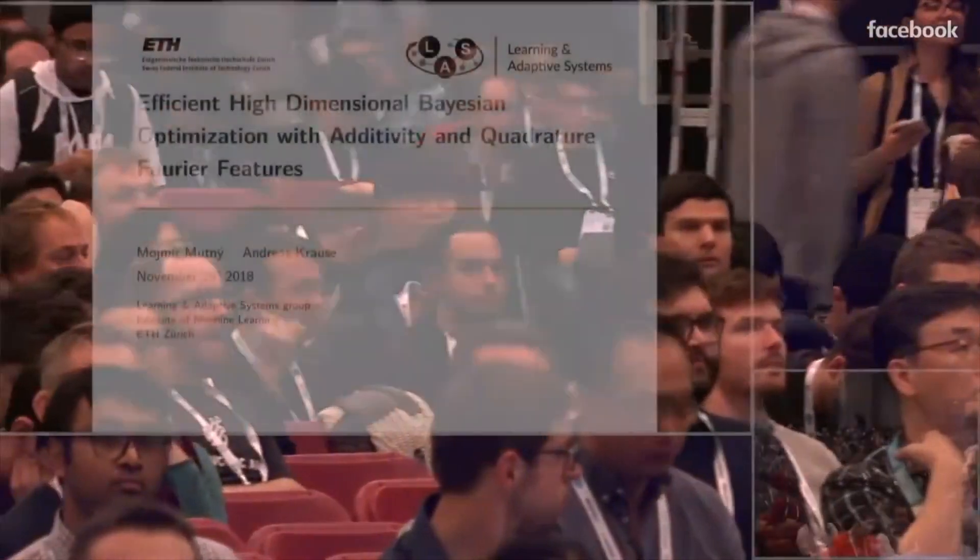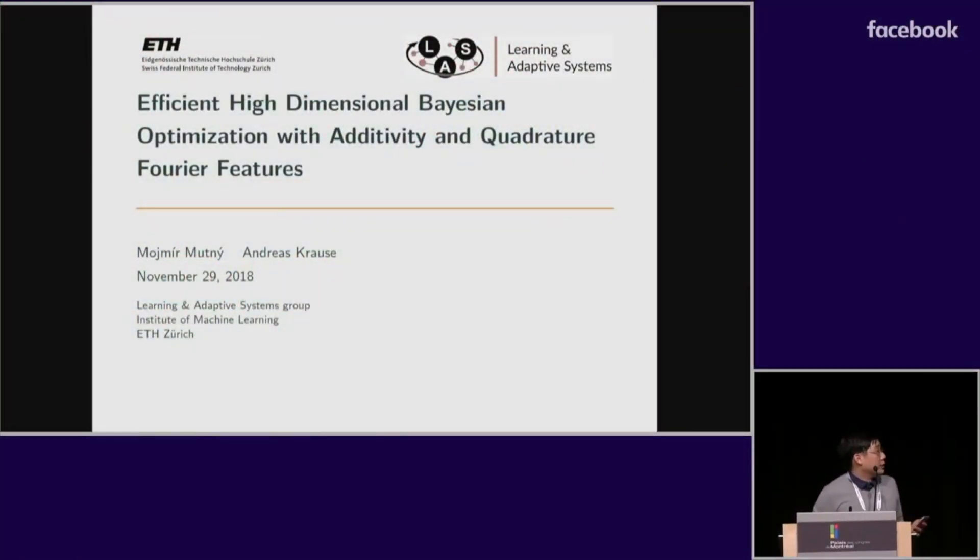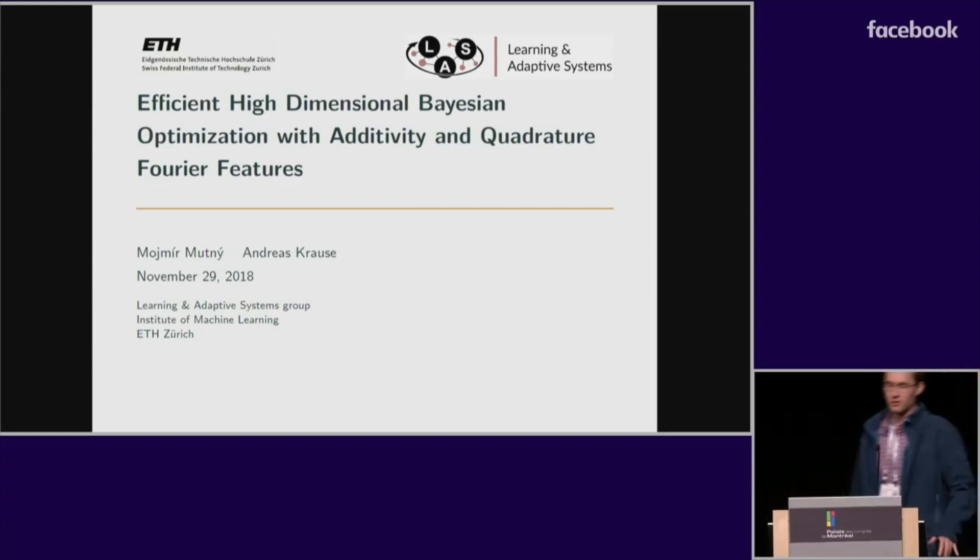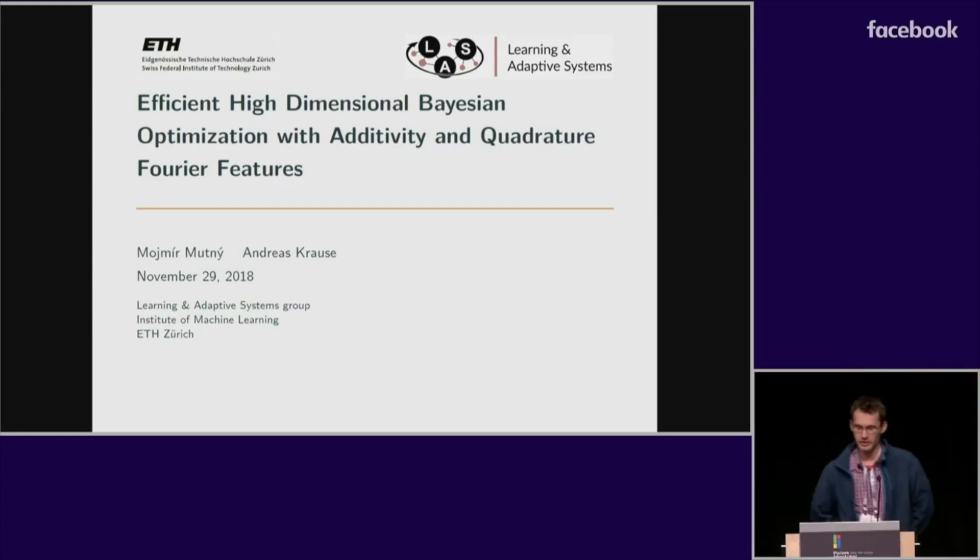Okay, so up next we have Mojmir Mutny presenting on efficient high-dimensional Bayesian optimization with additivity and quadrature Fourier features. Good afternoon, everybody. So I'll be talking about high-dimensional Bayesian optimization. This is joint work with Andreas Krause from ETH Zurich.